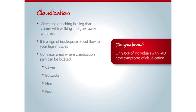Claudication is a cramping or aching in your leg that comes on with walking and goes away with rest. It is a sign of inadequate blood flow to your leg muscles. Common areas where claudication pain may be located are in the calves, buttocks, hips, or feet.